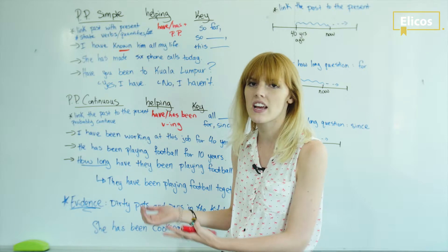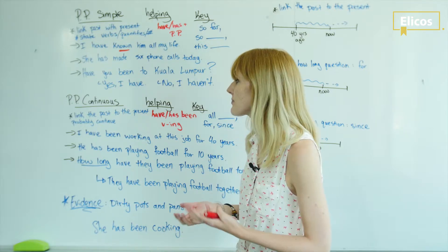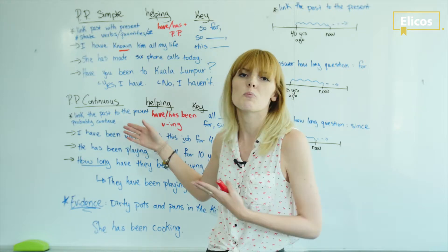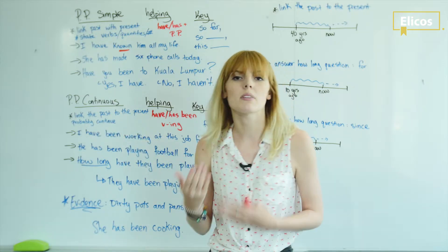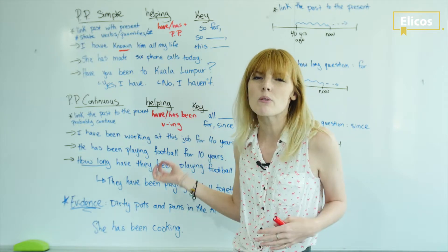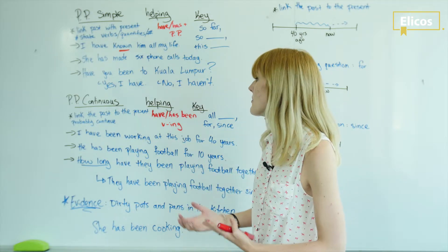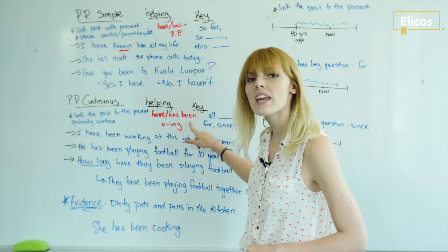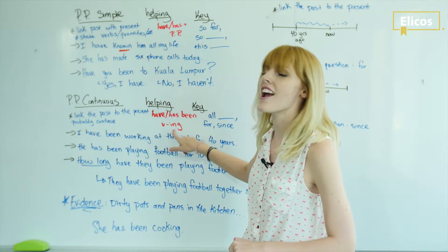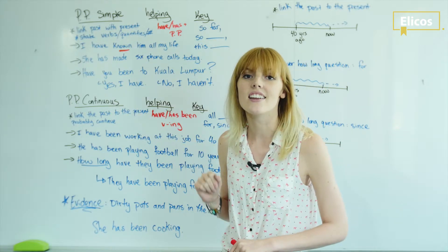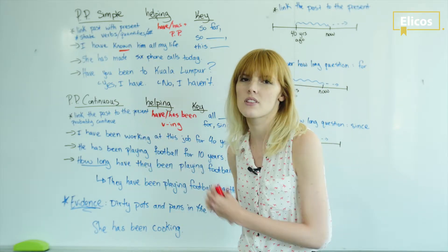Now let's take a look at the present perfect continuous. Again, we're using it to link the past to the present and it will probably continue in the future. Our helping words change this time. We're still using have or has, but we're adding been and verb-ing. Again, verb-ing to help make it continuous.